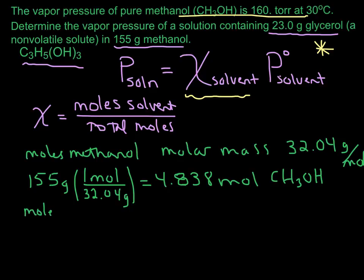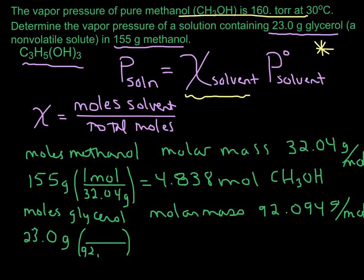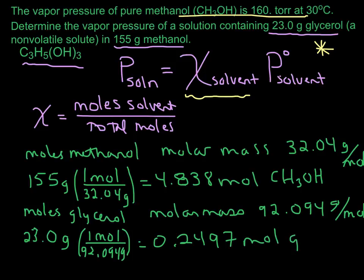Now let's calculate the moles of glycerol. The molar mass for glycerol is 92.094 grams per mole — make sure you can add up the molar masses to confirm that. Taking 23.0 grams of glycerol divided by 92.094 grams per mole gives us 0.2497 moles of glycerol.